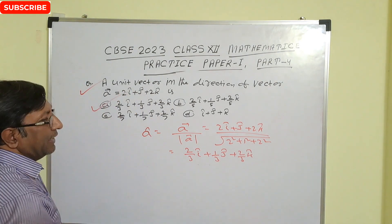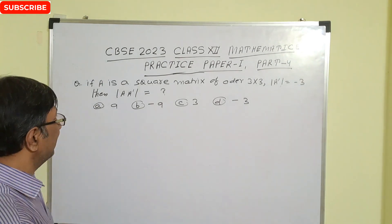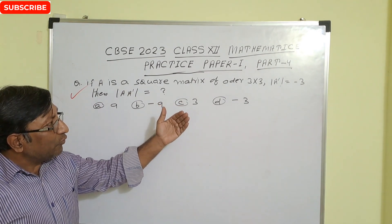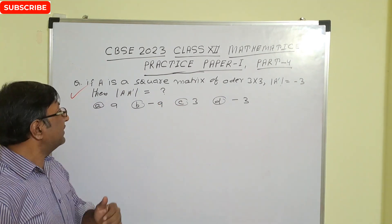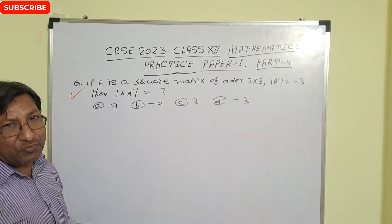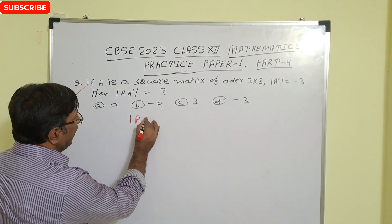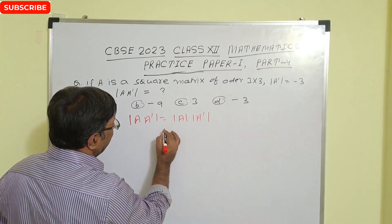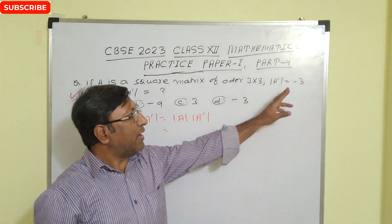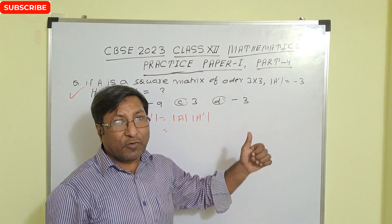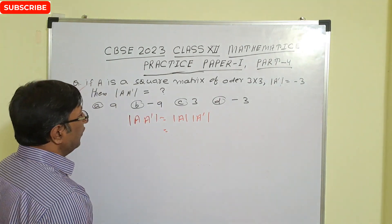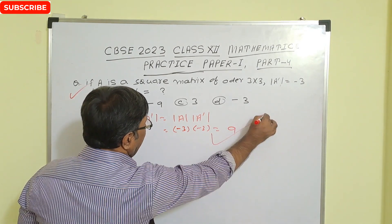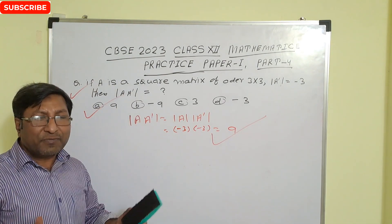Next question: if A is a 3×3 square matrix and |A'| = -3, then find |AA'|. We know |AA'| = |A| × |A'|. Since |A'| = -3, |A| is also -3. So |AA'| = (-3) × (-3) = 9. So 9 is the correct answer, option A.